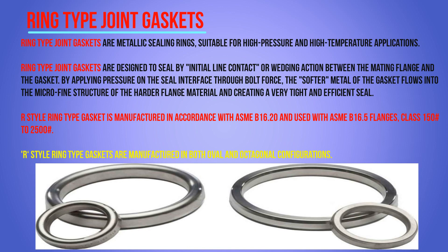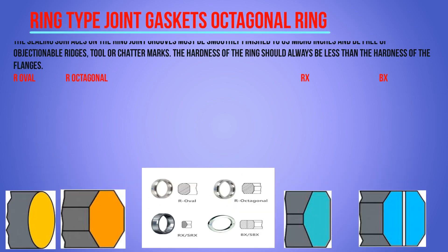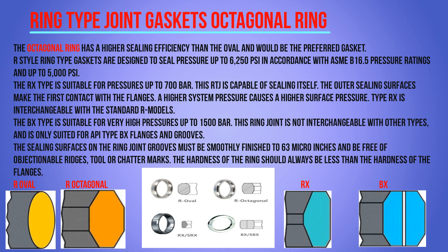The R-style ring type gasket is manufactured in accordance with ASME B16.20 and used with ASME B16.5 flanges in class 150 to 2500 ratings. R-style ring type gaskets are manufactured in both oval and octagonal configurations. The octagonal ring has higher sealing efficiency than the oval and is the preferred gasket. Octagonal R-style gaskets are designed to seal pressure up to 6,250 psi in accordance with B16.5 pressure ratings.